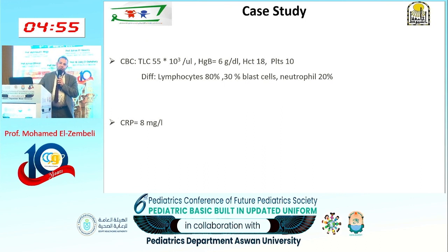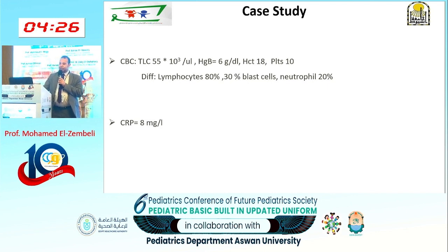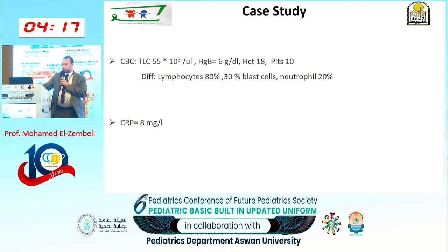Dr. Marwa, having attended the lecture, realized the importance of ordering a blood count with manual differential. This is the key point — whenever you find leukocytosis, don't rely on the automated machine report. You must send the blood film to a lab with a clinical pathology doctor specialized in hemato-pathology, who will examine the blood film. Dr. Marwa did the blood film and found lymphocytes at 80%, with 30% of them being abnormal mononuclear cells or blast cells, and neutrophils at 20%. This confirms acute leukemia.